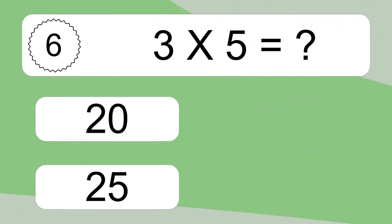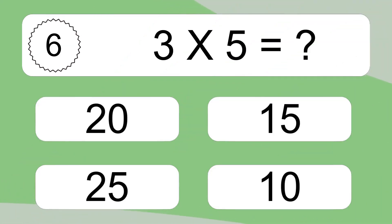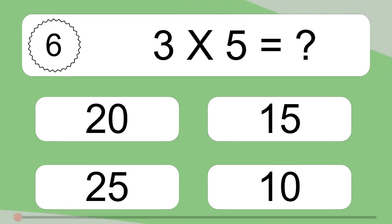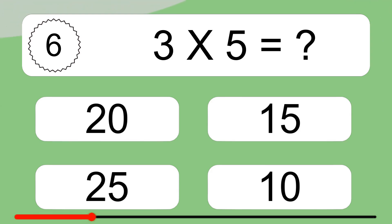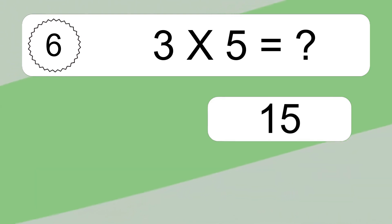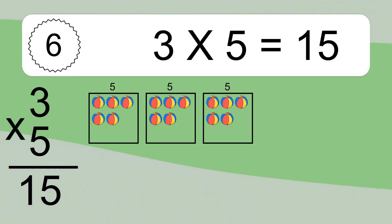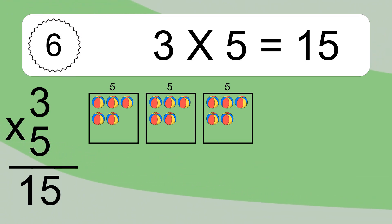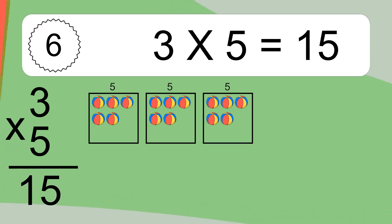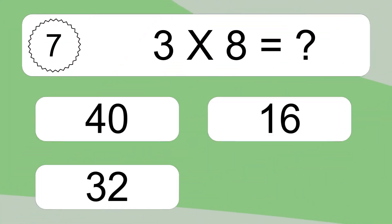3 times 5 equals what? 3 times 5 equals 15. We have 3 boxes and each box has 5 colorful balls inside. If you count all the balls in all the boxes together, you will have 3 times 5 balls. This equals 15 balls.